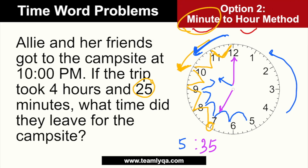Depending on which method you're most comfortable with — that's the one I suggest you use. The clock method works, but people sometimes forget to subtract the extra hour that was borrowed, and they end up with 6:35 instead of 5:35. So my recommendation is: master the addition and subtraction method first. Once you have that down, then you can try the clock method for mental math.